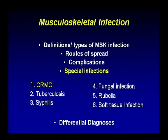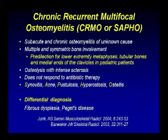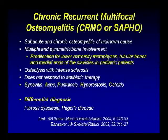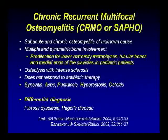Chronic recurrent multifocal osteomyelitis (CRMO) is a subacute-chronic osteomyelitis of unclear etiology — no organisms can be isolated. It involves multiple bones, typically the lower extremity metaphyses and tubular bones, and very characteristically the medial end of the clavicles in pediatric patients. It shows osteolytic changes with intense sclerosis and does not respond to antibiotic therapy. The term SAPHO is also used — standing for Synovitis, Acne, Pustulosis, Hyperostosis, and Osteitis — associated with skin changes and bony abnormalities.